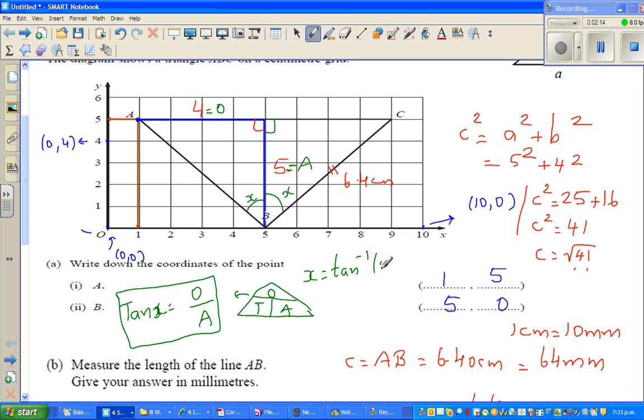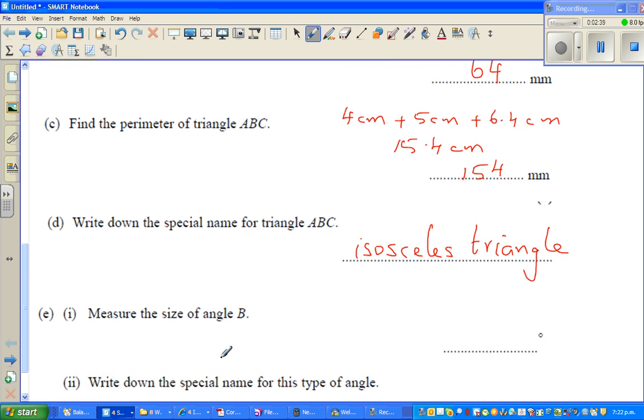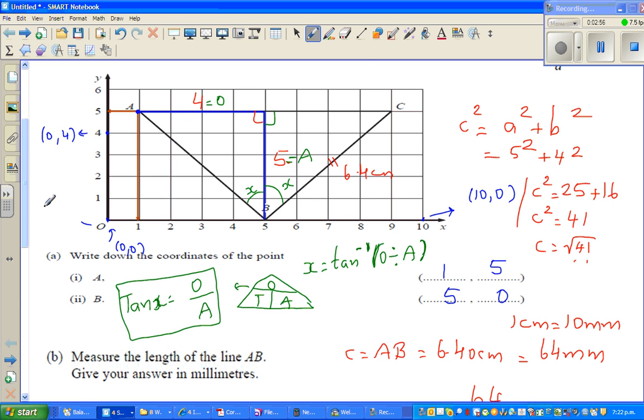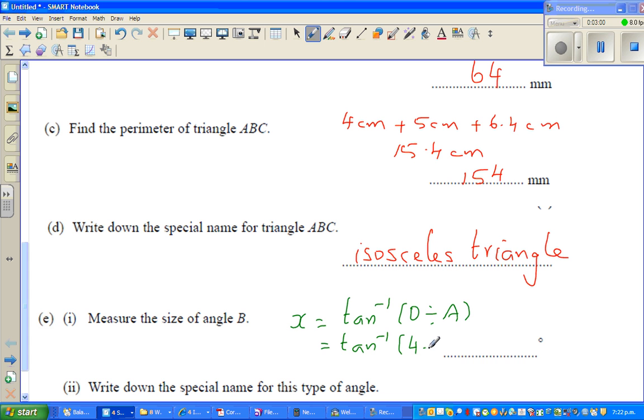To figure this out, you need a calculator, most probably an electronic calculator. When you do tan inverse, or in some books they say arc tan, for this question to figure out B we'll first find X. We can say X is tan inverse of O divided by A. This equals tan inverse of 4 divided by 5. I can get my calculator out and make sure that the angle is set on degrees.